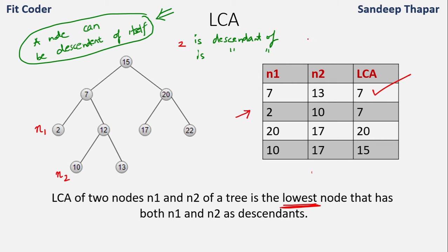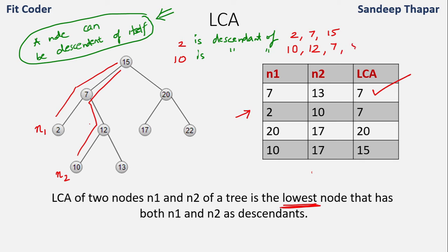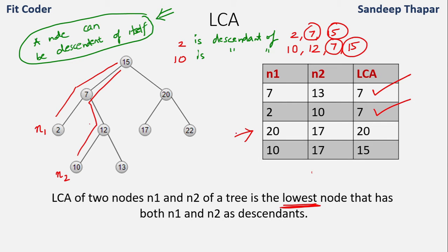In the second case, N1 is 2 and N2 is 10. Node 2 is a descendant of 2, 7, and 15. Node 10 is a descendant of 10, 12, 7, and 15. The common nodes are 7 and 15, and the lowest node is 7. So the LCA of 2 and 10 is node 7.